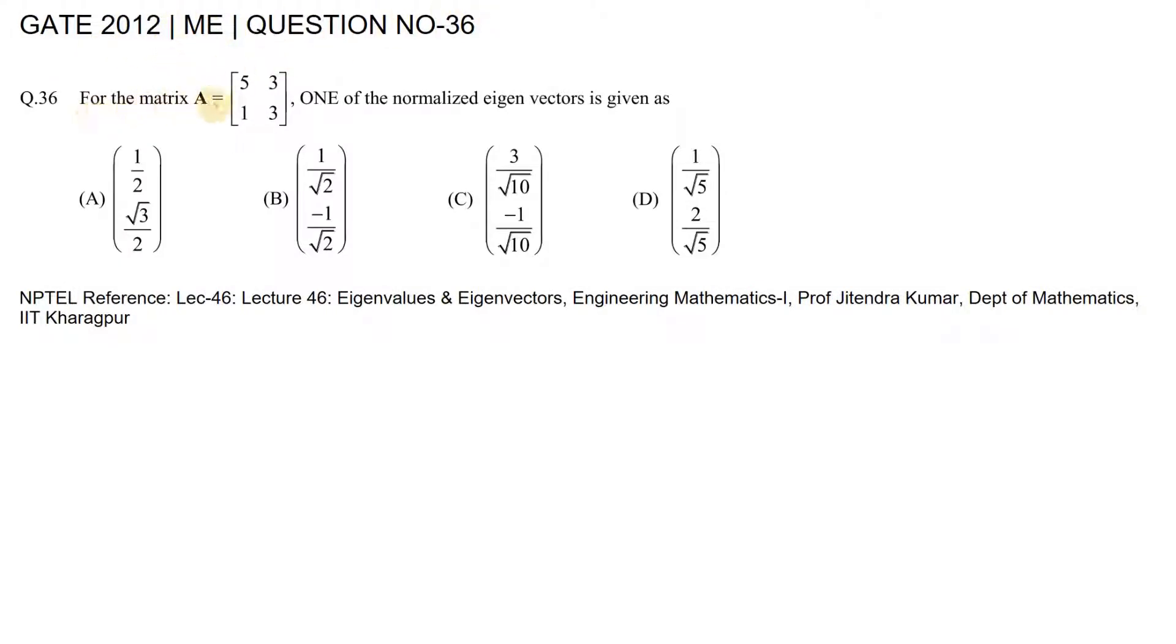The question is: for the matrix A given by 5, 1, 3, 3, column entries are 5, 1 and second column entries are 3 and 3. One of the normalized eigenvectors is given, so among these four options, we need to find one of the given eigenvectors.